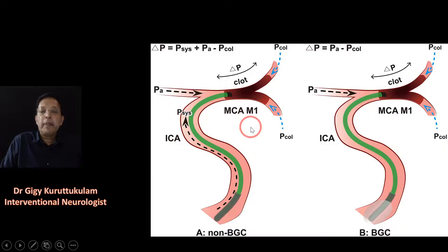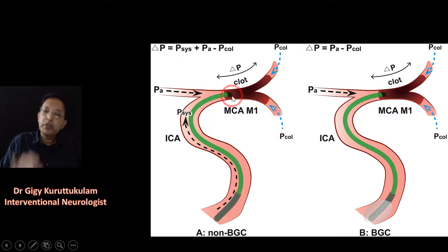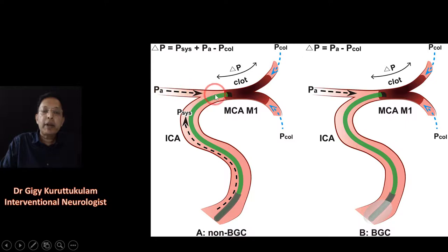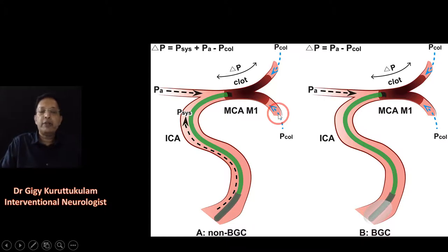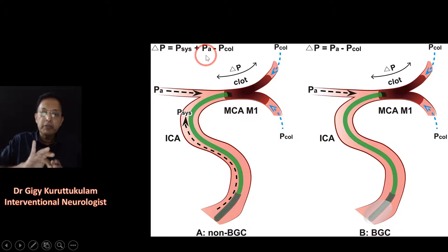There is the systemic pressure acting through the internal carotid artery, pushing the clot away distally. There may also be a reversal of flow, with pressure through the anterior cerebral artery also pressing the clot away. If there are good collaterals distal to the clot, the collateral circulation pressure pushes the clot in the opposite direction. So the net pressure on the clot is: P-systemic plus P-ACA pushing it away, minus the collateral pressure pushing it back.